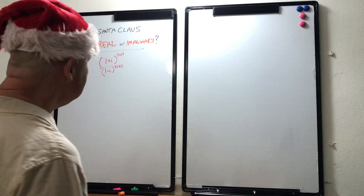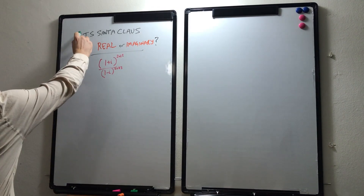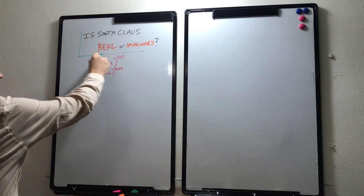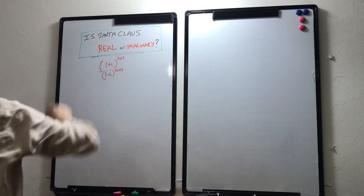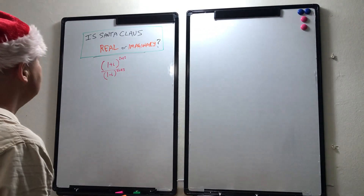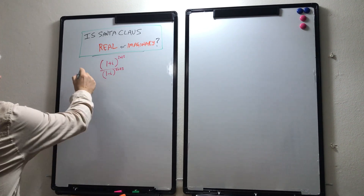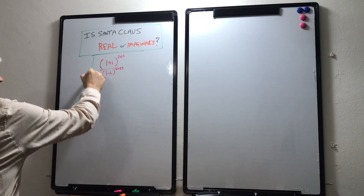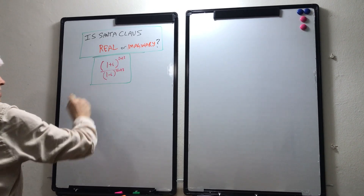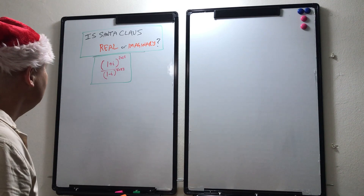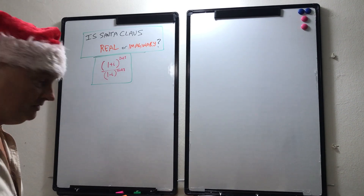The question on everybody's lips at this time of year is: is Santa Claus real or imaginary? I'm reliably informed that the answer to that question lies within the evaluation of this expression: (1 + i)^2023 divided by (1 - i)^2023.